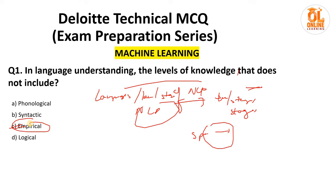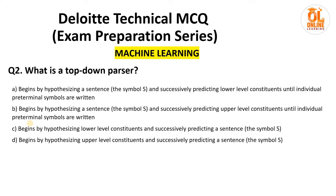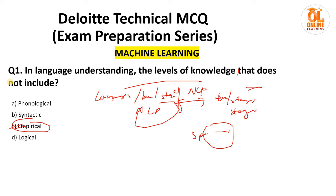The next question is about parsers. To answer this you need to know what a parser is, including top-down and bottom-up parsers. A top-down parser begins by hypothesizing a sentence S and successively predicts lower-level constituents until individual terminal symbols are reached. The answer is given in option A itself, which describes this process.